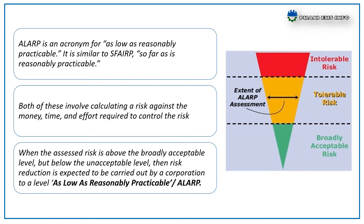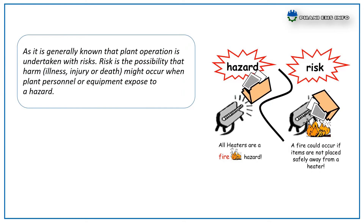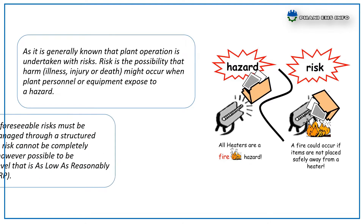When the associated risk is above the broadly acceptable level but below the unacceptable level, then risk reduction is expected to be carried out at a corporate level — As Low As Reasonably Practicable, or ALARP. It is generally known that plant operation is undertaken with risks. Risk is the possibility that harm might occur when plant personnel or equipment are exposed to a hazard.